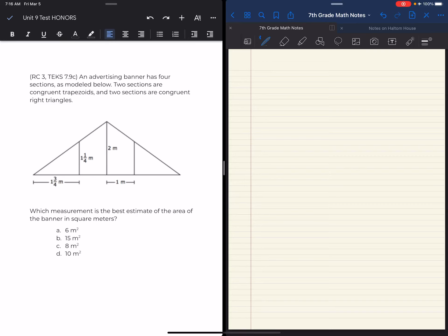Hey, amazing mathematicians! Let's get into this question that you see on the left side of the screen. An advertising banner has four sections as modeled below. Two sections are congruent trapezoids and two sections are congruent right triangles. Which measurement is the best estimate of the area of the banner in square meters?